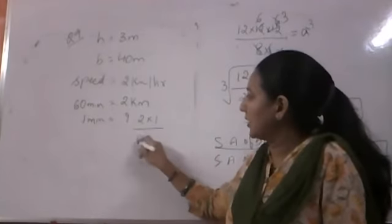And it travels a distance of 2 kilometers. One hour means 60 minutes. 60 minutes, 2 kilometers. So in one minute, how much will it go? Say 2 into 1 upon 60. But 2, what is it? It's kilometers.